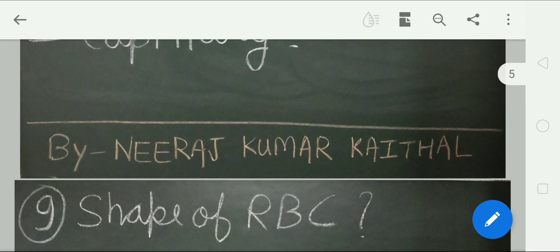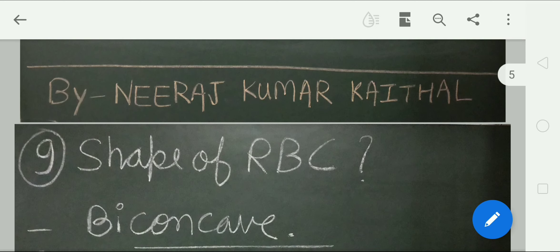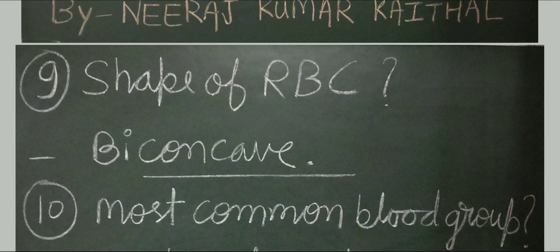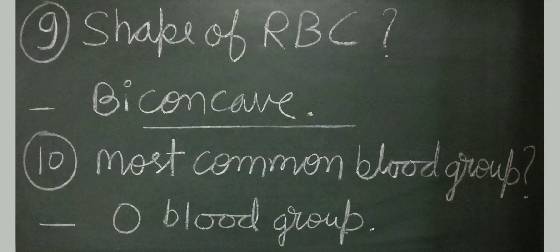Shape of red blood corpuscles: RBCs are biconcave in shape, seven micrometers in diameter, and also known as erythrocytes. Question number 10: most commonly occurring blood group type. O blood group. Approximately 45% of people worldwide have O type blood group.